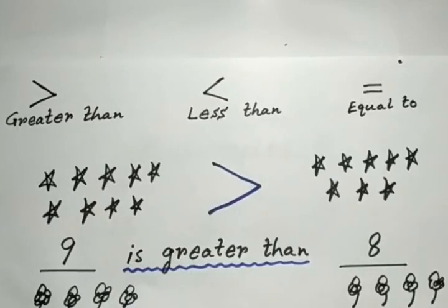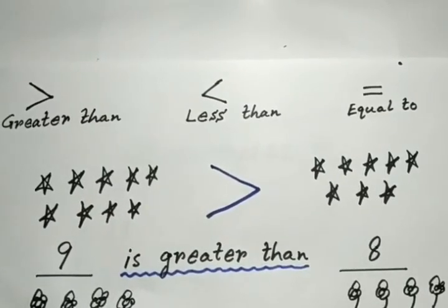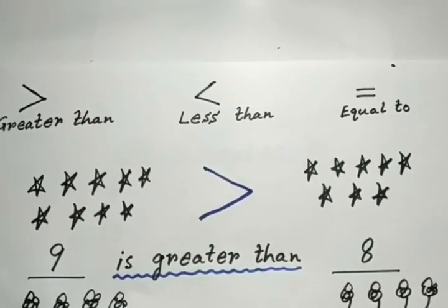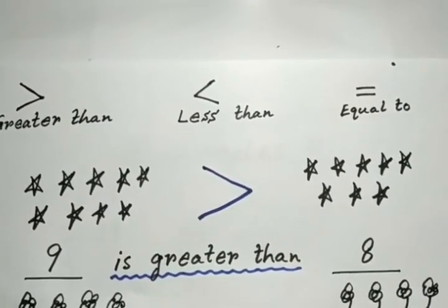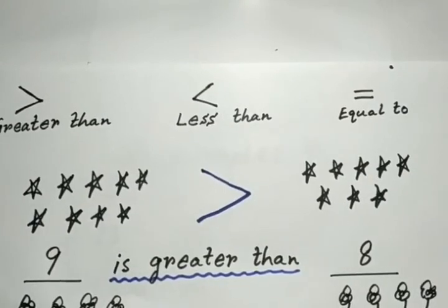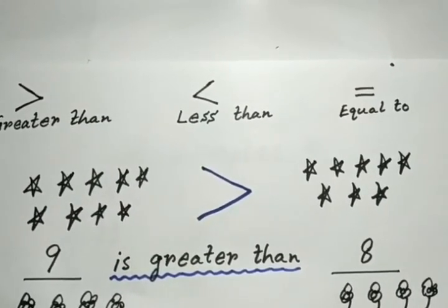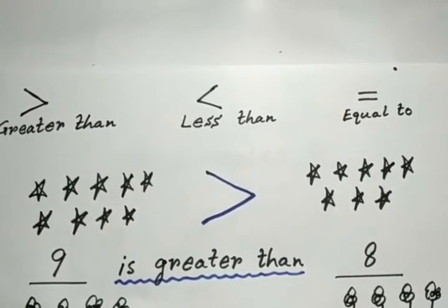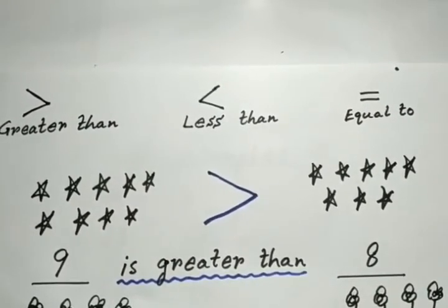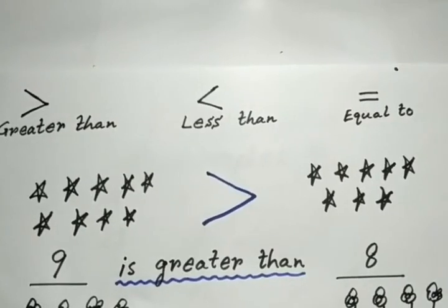Look at the picture. Here we have two groups of stars. Left side we have 9 stars and right side we have 8 stars. Now as I said, the open side always faces towards the bigger number, so we are going to use the greater than sign.